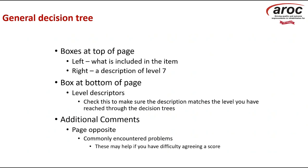With the decision tree, there are boxes at the top left and right — on the right is a description of the seven, working down the page to a score of one. On the opposite page, unlike the FIRM manual, there are comments. In the FIRM manual the text page usually has notes underneath, but in the FAM manual the text is underneath the decision tree, with notes on the opposite page.